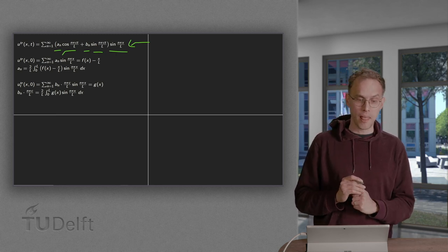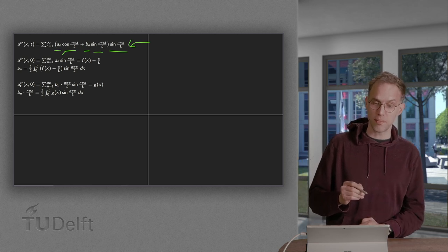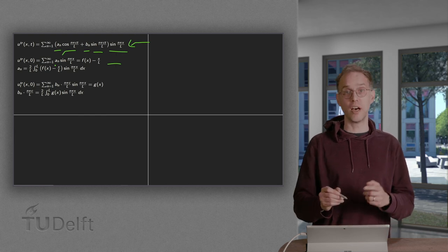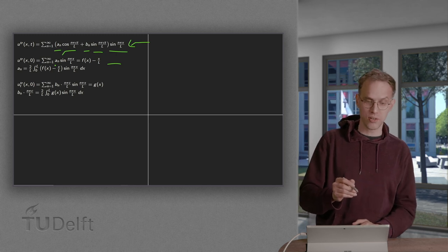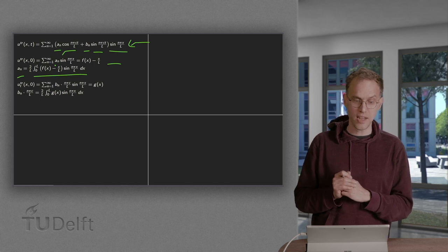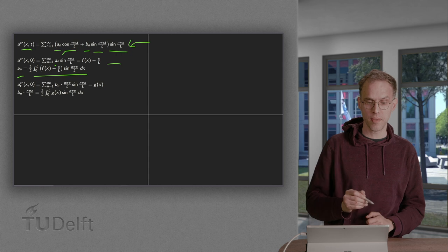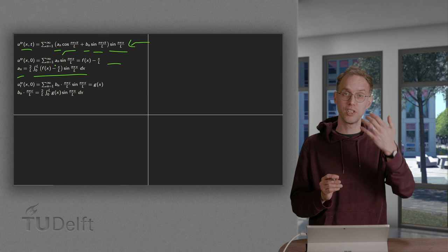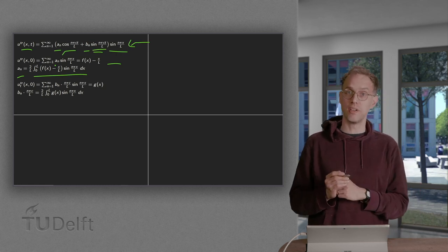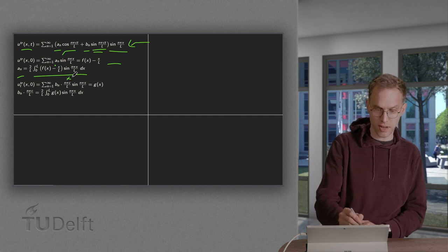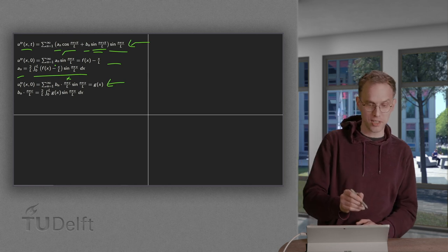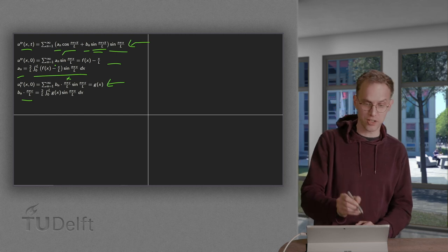The coefficients an and bn are determined by the initial conditions. Plugging in t = 0, the sin(n*pi*c*t/l) terms drop out, and we are left with the an terms, which must equal f(x) minus x/l from the equilibrium solution. We use Fourier integrals to determine the an. For the bn, we differentiate u_transient with respect to time, plug in t = 0 — the cosine terms vanish and we get a factor of n*pi*c/l from the chain rule — and this must equal our second initial condition g(x).